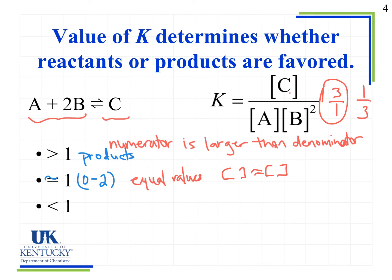When we look at less than 1, what that tells us is our denominator is larger than the numerator. Back to our example with 3 over 1 versus 1 over 3. In order to get a number less than 1, the number on the bottom must be larger than the number on top.